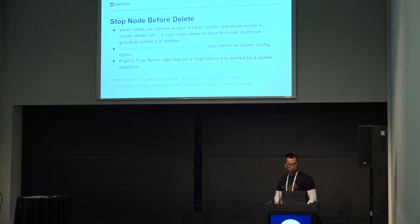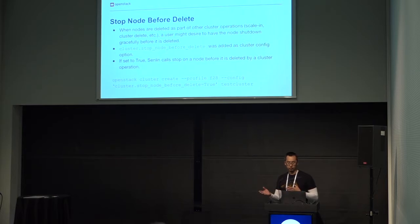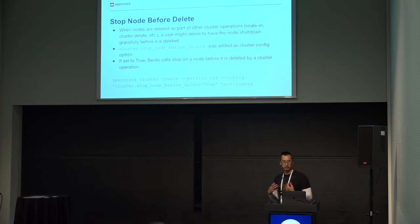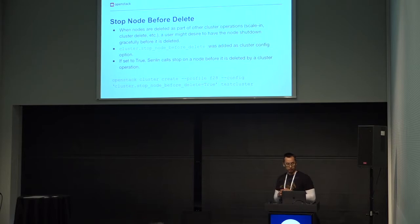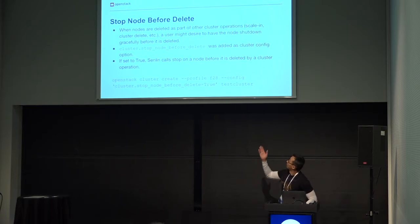The last major feature added was stop node before delete, which came out of a customer request for nodes or VMs to gracefully shut down when a cluster is scaling in or deleting a node. We added a cluster config option called stop node before delete. If set to true, Sendin will call a stop on the node, wait for it to gracefully shut down, and then delete the node. This is specified during cluster creation as shown below.